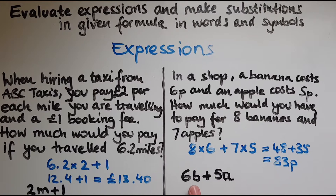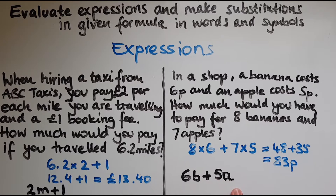But it could be, say, 5 bananas — so 5 times 6 is 30 — and 6 apples — 6 times 5 is 30 again — so 60 pence in total. You can have any number of apples or bananas.